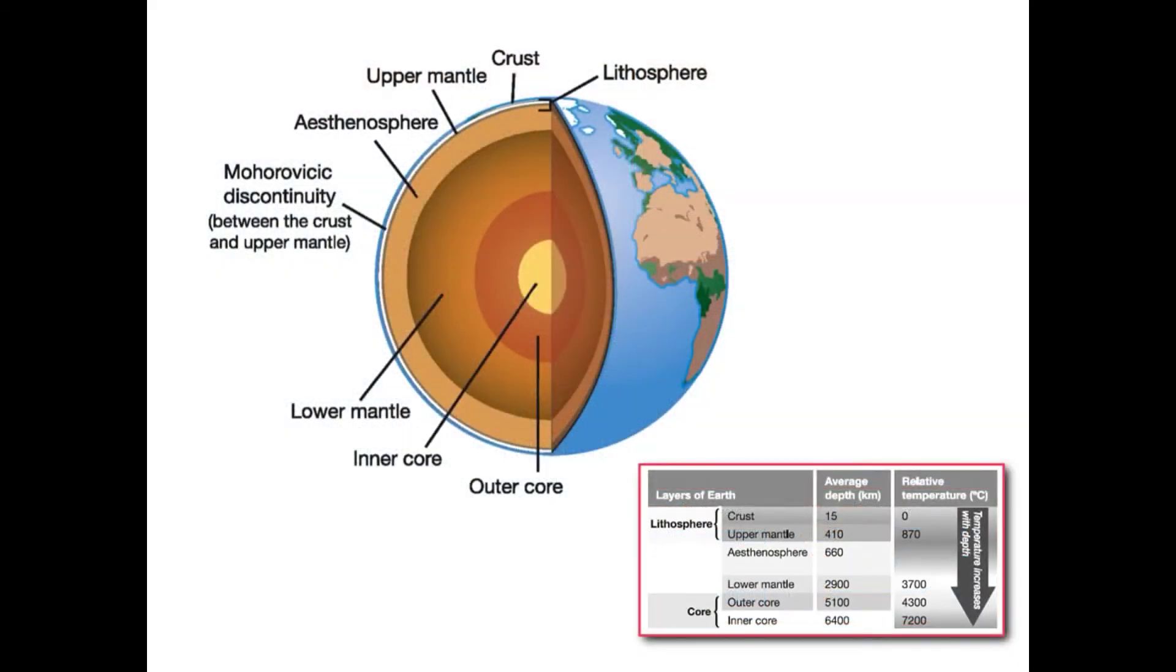Using seismic data, we have now learned that the distance from the Earth's surface to the center of the planet is close to 6,400 kilometers. Temperatures of the core exceed 7,200 degrees Celsius, equal to the temperature on the surface of the sun.